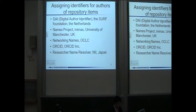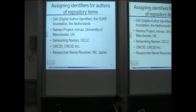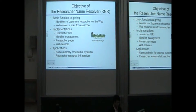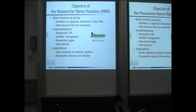This is related work, which includes the DAI and NAMES project. These are very promising identifier systems. Our system is called the Research Name Resolver. Basically, the Research Name Resolver functions as an identifier system for Japanese researchers on the web, providing web resource links for researchers.